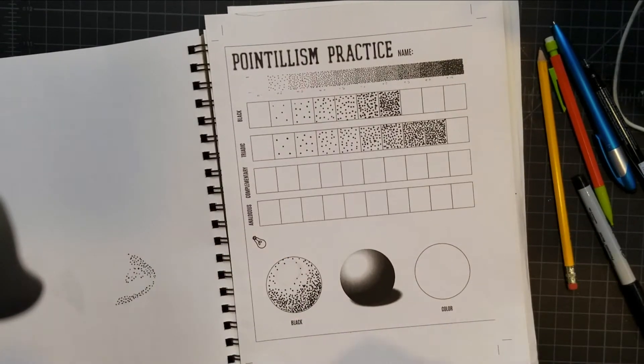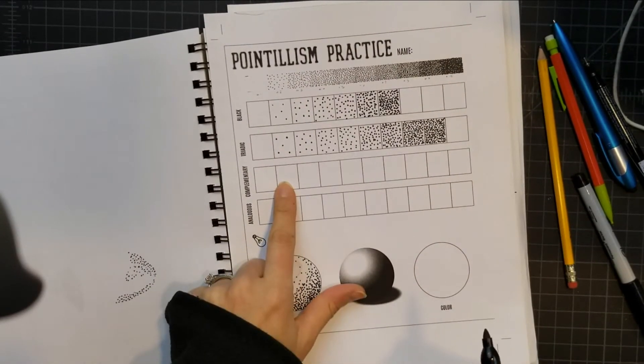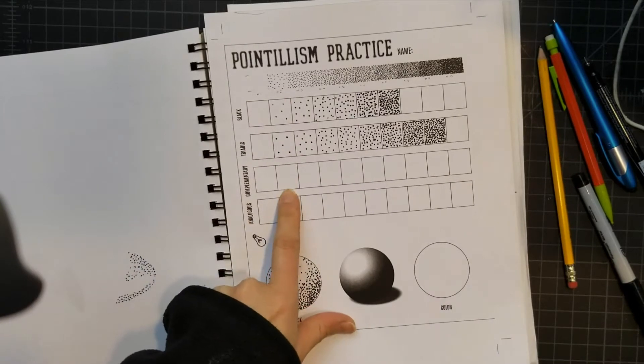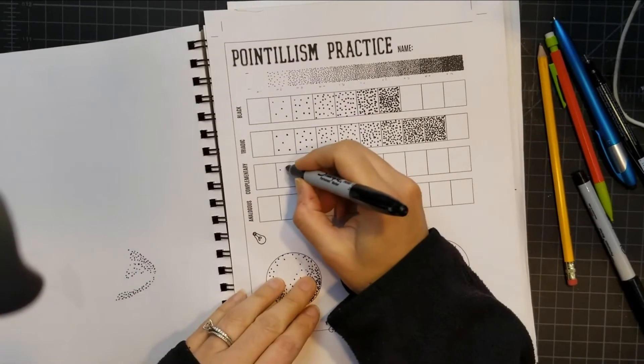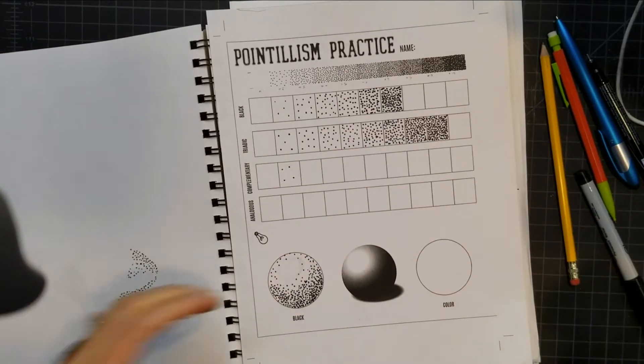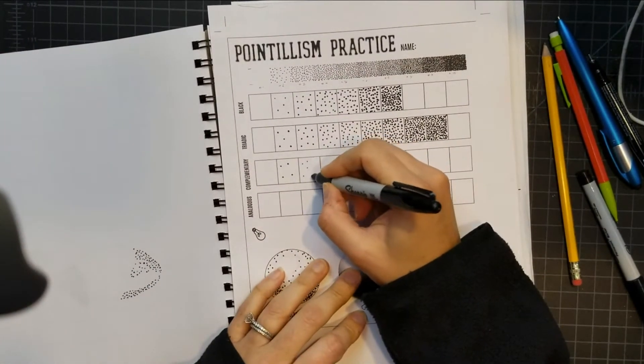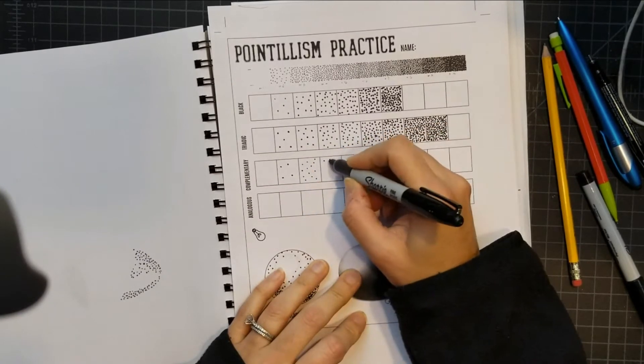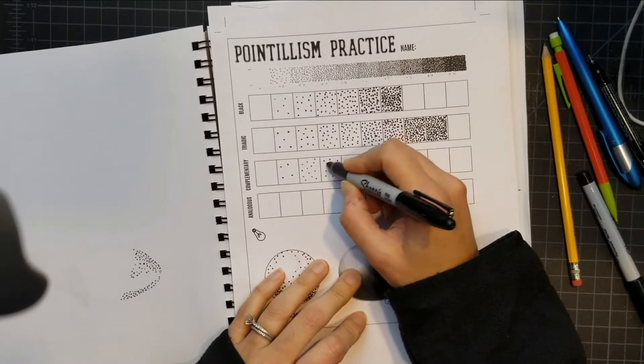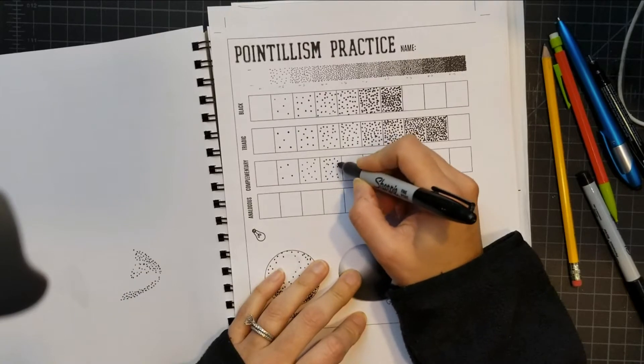I would recommend starting in the lightest. So this is your number two. This is white. Then we move over and we put a couple of dots in there, maybe four or five. Then in the next one, we do a couple more, making it look darker. Then we do some more, so on and so forth.